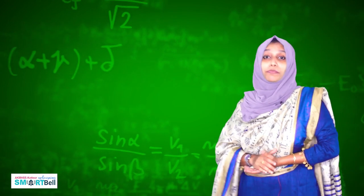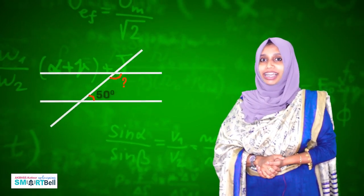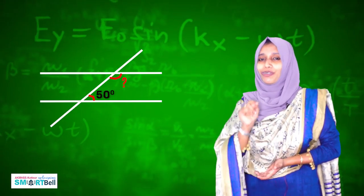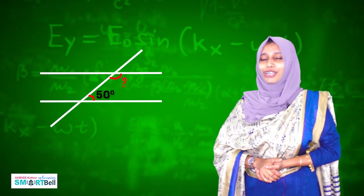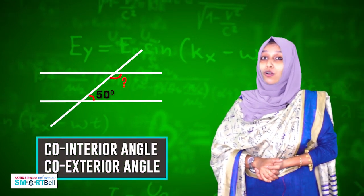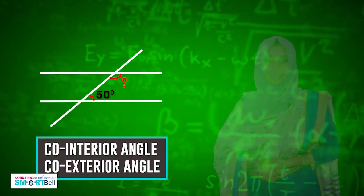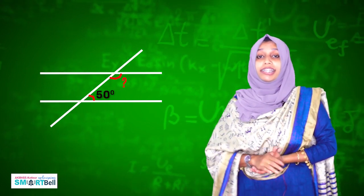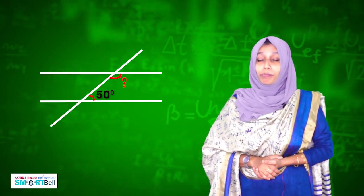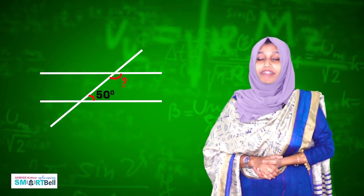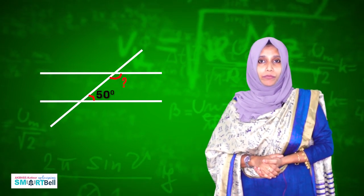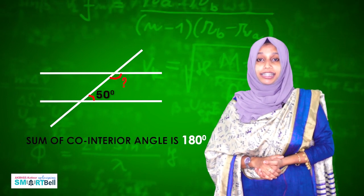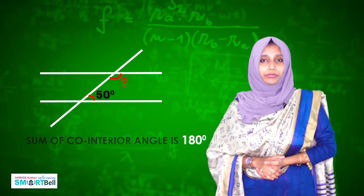Let's look at a picture of two parallel lines cut by a third line. We are going to learn co-interior and co-exterior angles. Co-interior angles lie between two parallel lines and on the same side of the transversal line. The sum of co-interior angles is 180 degrees — that means they are supplementary.